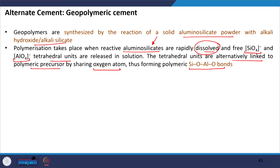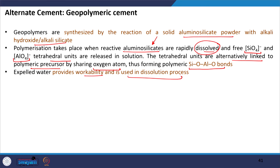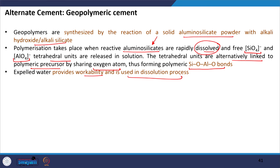A certain quantity of water is released during the reaction. The expelled water provides workability and is also used in the dissolution process of aluminium during the reactions. Various sources of alumino-silicate include fly ash, GGBFS, metakaolin, and rice husk ash.